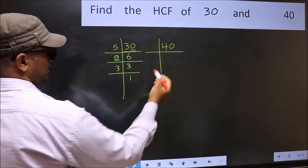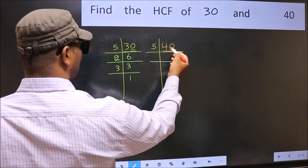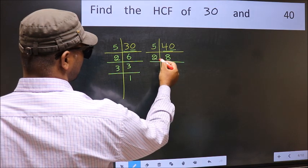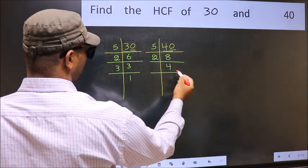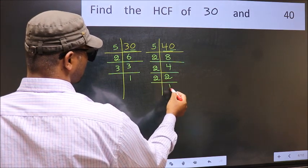Now the other number. Last digit 0 so take 5. When do we get 40 in 5 table? 5, 8 is 40. Now 8 is 2, 4 is 8. 4 is 2, 2 is 4. Now 2 is the prime number so 2, 1 is 2.